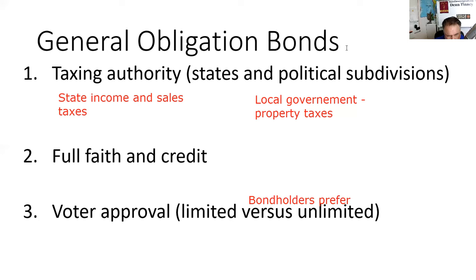Walt said if he ever got a do-over, he'd get his own political charter. He went to the state of Florida and said he was thinking about Disney World but didn't want to be in the city of Orlando or Orange County. They gave him his own political charter: the Reedy Creek Improvement District. Disney is not going to charge itself any more in property taxes than it needs to pay interest and principal on the bonds.